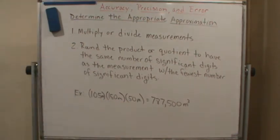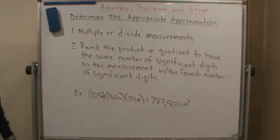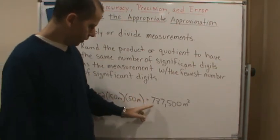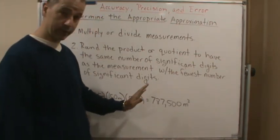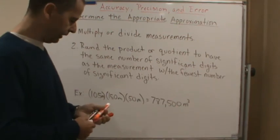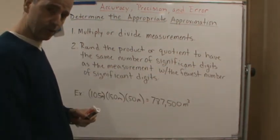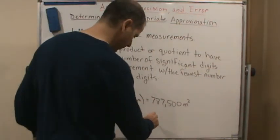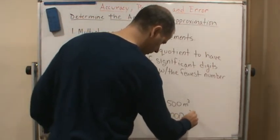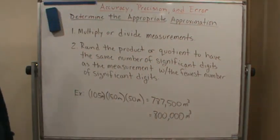Since the measurement with the fewest significant digits has only one significant digit, we round this result to one significant digit. One significant digit means the leftmost non-zero digit is the only non-zero digit, so everything to its right becomes zero. Therefore, 787,500 rounds to approximately 800,000 cubic meters. That is the appropriate approximation for this case.